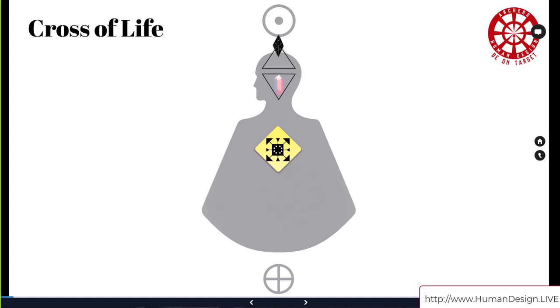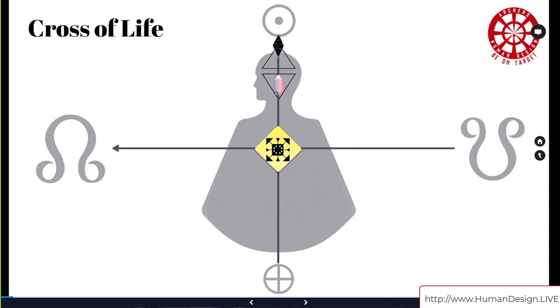There's crosses in the body graph, and today we're just looking at the personality side. This cross of life is made of the sun and also the earth. We have a south node, the one that's pointing down, and the north node, the one that's pointing up.